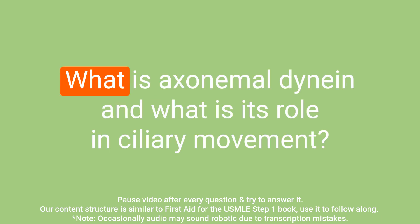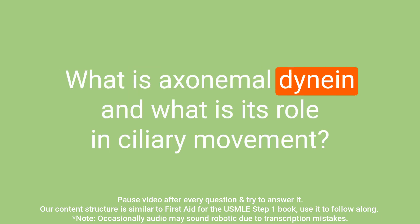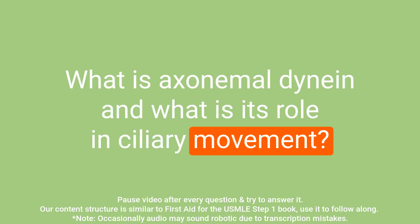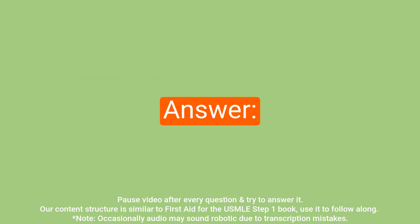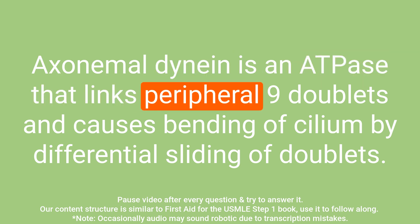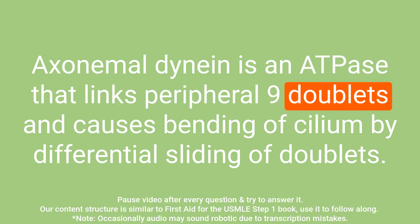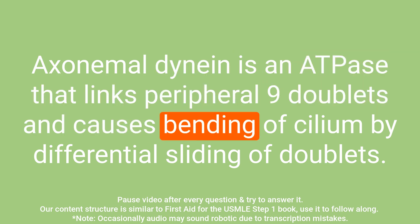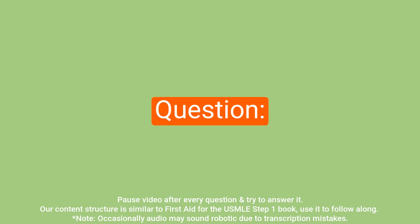Question: What is axonemal dynein and what is its role in ciliary movement? Answer: Axonemal dynein is an ATPase that links peripheral nine doublets and causes bending of the cilium by differential sliding of doublets.